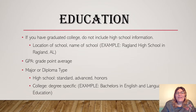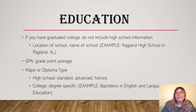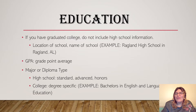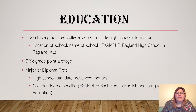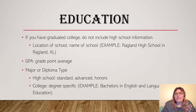The next section is your education history. They may ask for the name and location of your school. They might also ask for your GPA — your grade point average — because how you perform as a student is often seen as directly related to how you'll perform as a worker. They may also ask your major or diploma type: in high school this is standard versus advanced or honors; in college it's more specific, such as a bachelor's in English and language arts education.